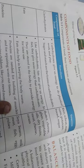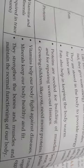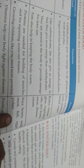Next is protein. Proteins are needed for building our muscles and for repairing worn-out tissues. Growing children like you need more protein. Examples of protein-rich foods are soybeans, milk, meat, fish, eggs, and pulses.